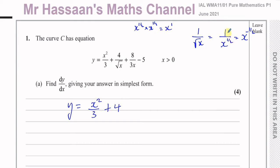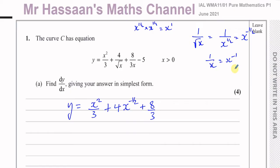Writing it in the numerator with a negative power means the reciprocal: X to the power of minus a half is the same as 1 over X to the power of a half. So this term becomes 4X to the power of negative a half. Then you have plus 8 over 3, and since 1 over X is the same as X to the power of negative 1, this is 8 over 3 times X to the power of negative 1, and then minus 5 at the end.